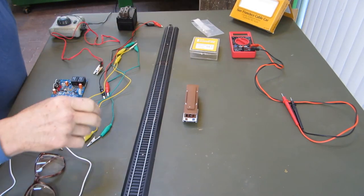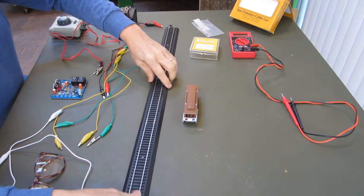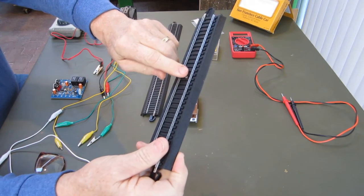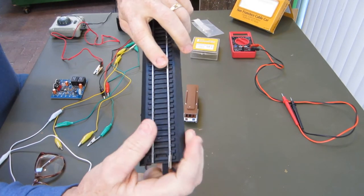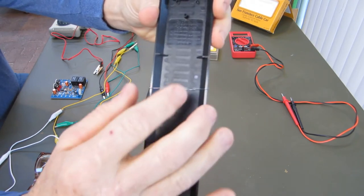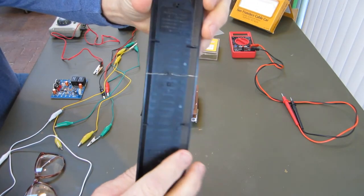I have a few pieces of Bachmann Easy Track here and what I've done is I've drilled a couple of holes in between the ties, run the opto sensor through it and bent the leads out so that I can attach to them.